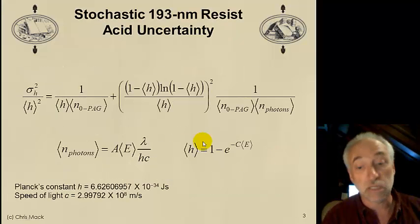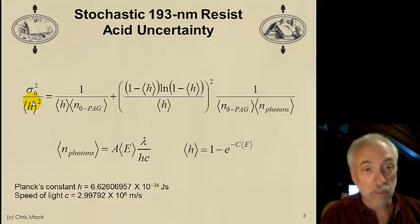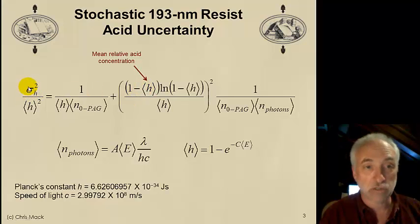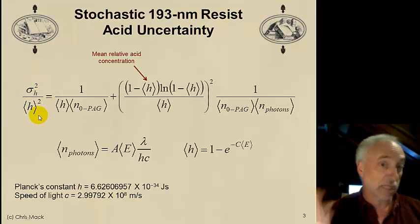Here is the uncertainty in the acid concentration, given relative to the mean. The brackets around a concentration denote the mean, so the bracketed H is the mean relative acid concentration. This expression is the standard deviation of the acid relative to the mean, squared — so it's the relative variance.